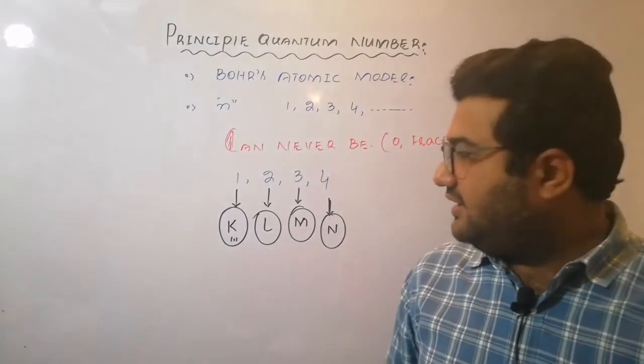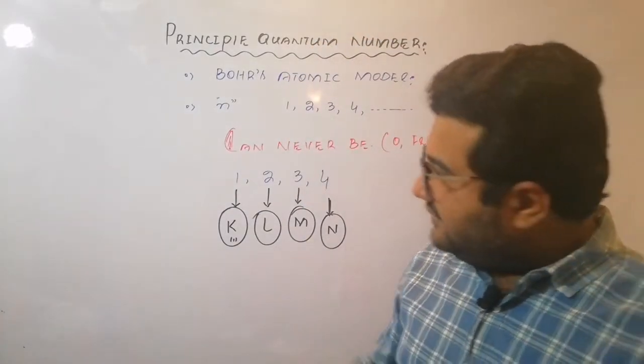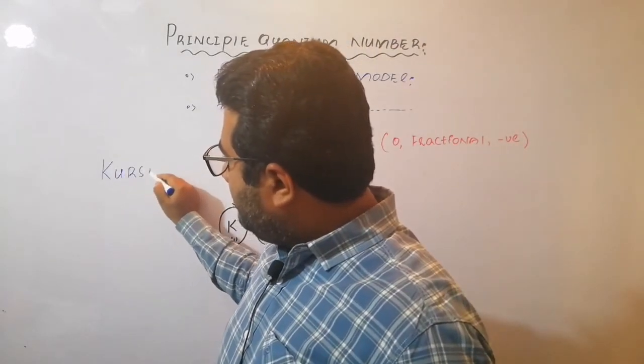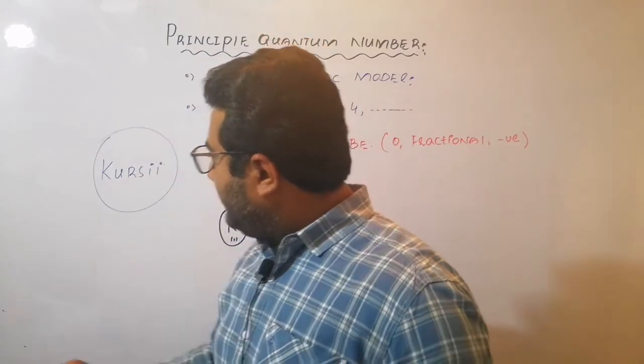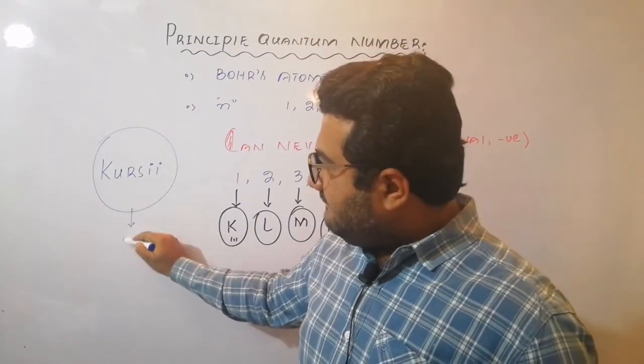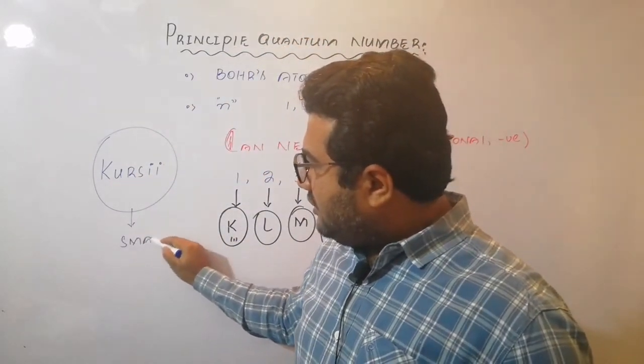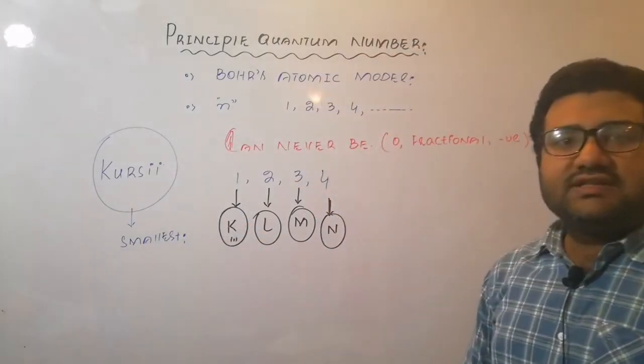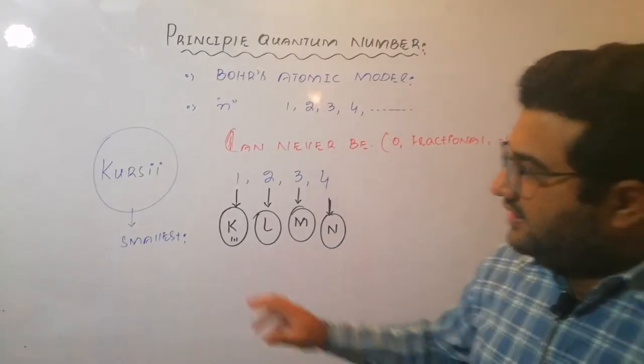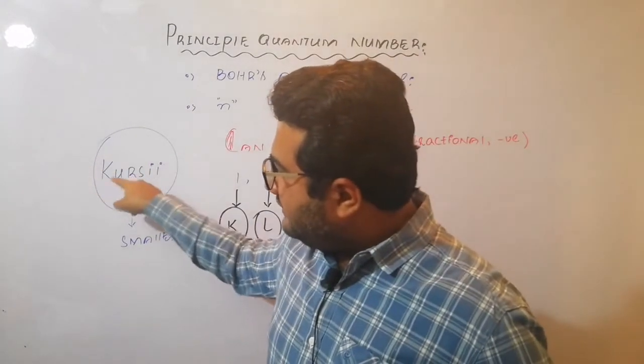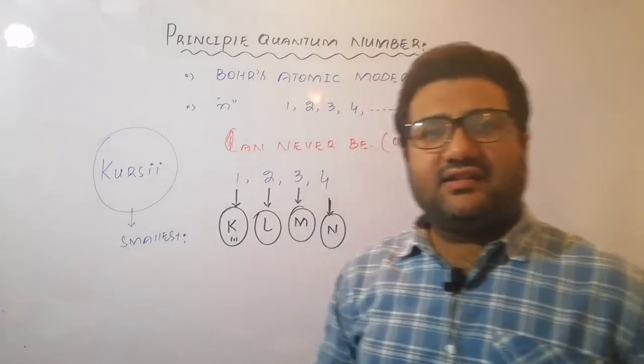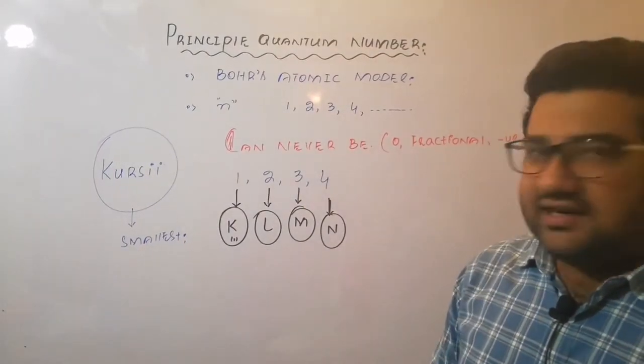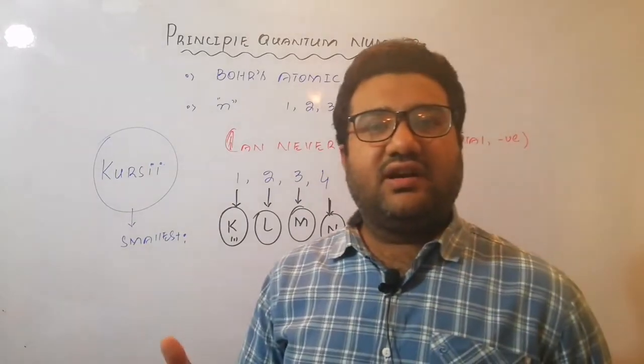The second logic: in Latin language, there is a word Kursi, and Kursi means smallest. Because K is the smallest shell, that's why from Kursi we have taken the first letter K. These are the two points that I found why the first shell is called the K shell and why it is not called A shell.